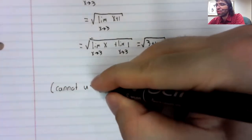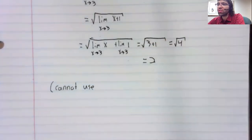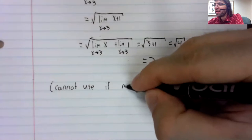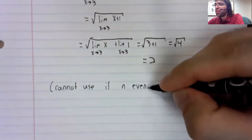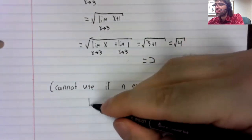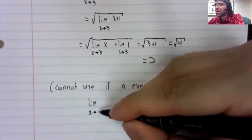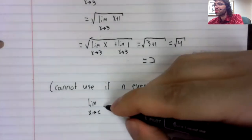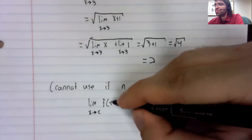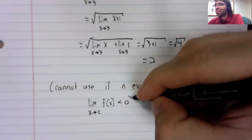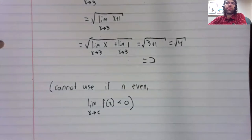So we cannot use this rule if n is even and the limit as x approaches c is negative, because that would give us an even root of a negative number, and that's imaginary.